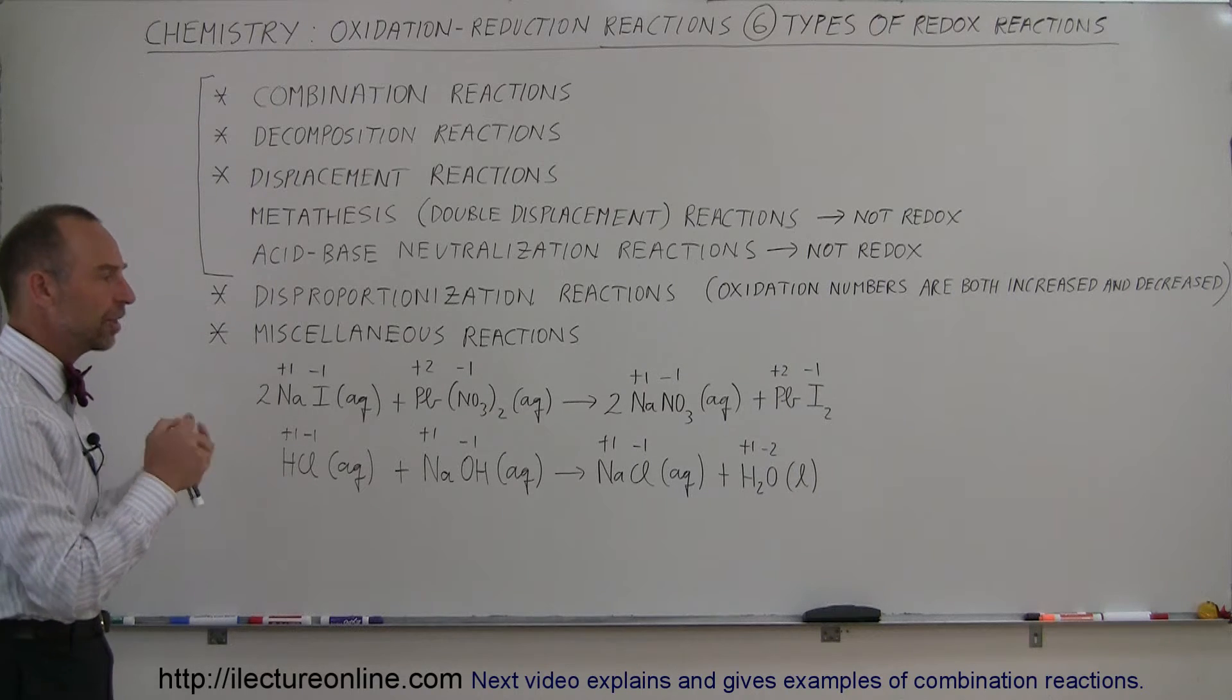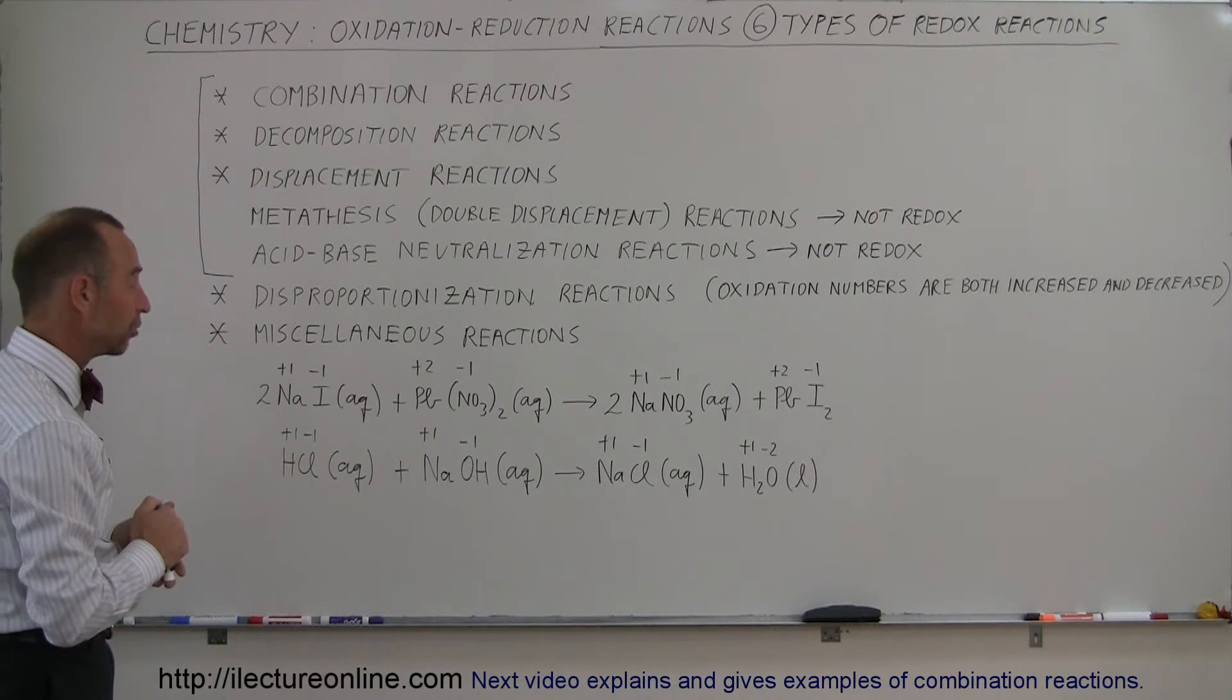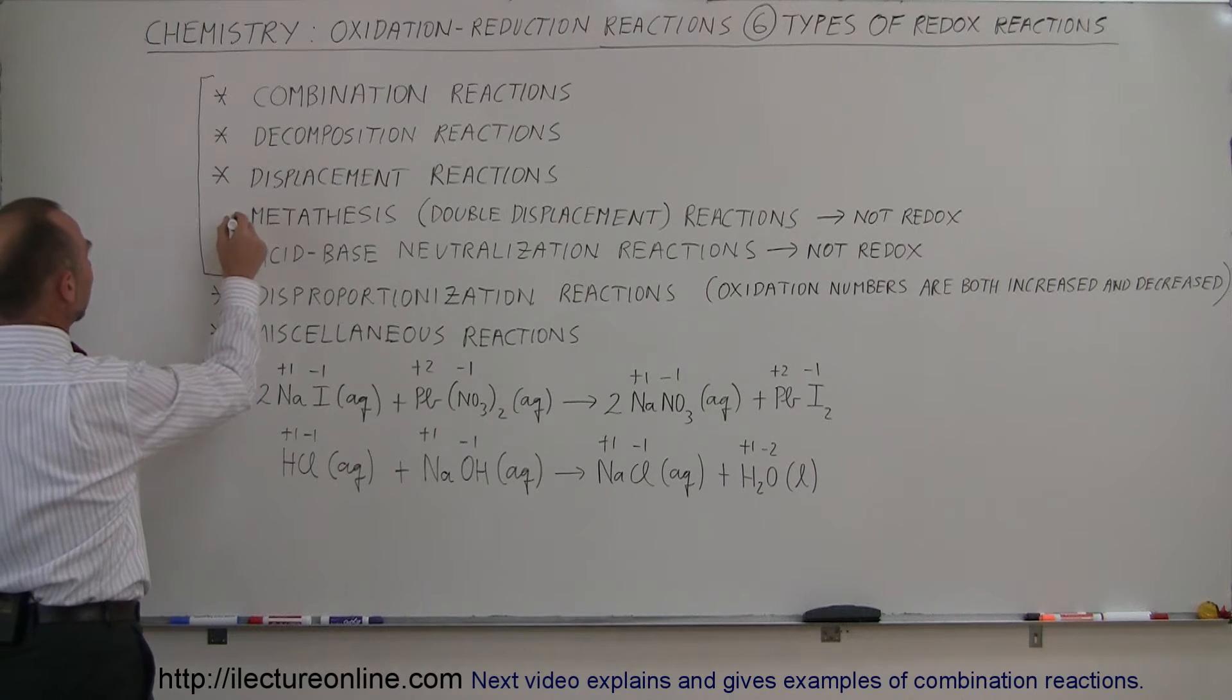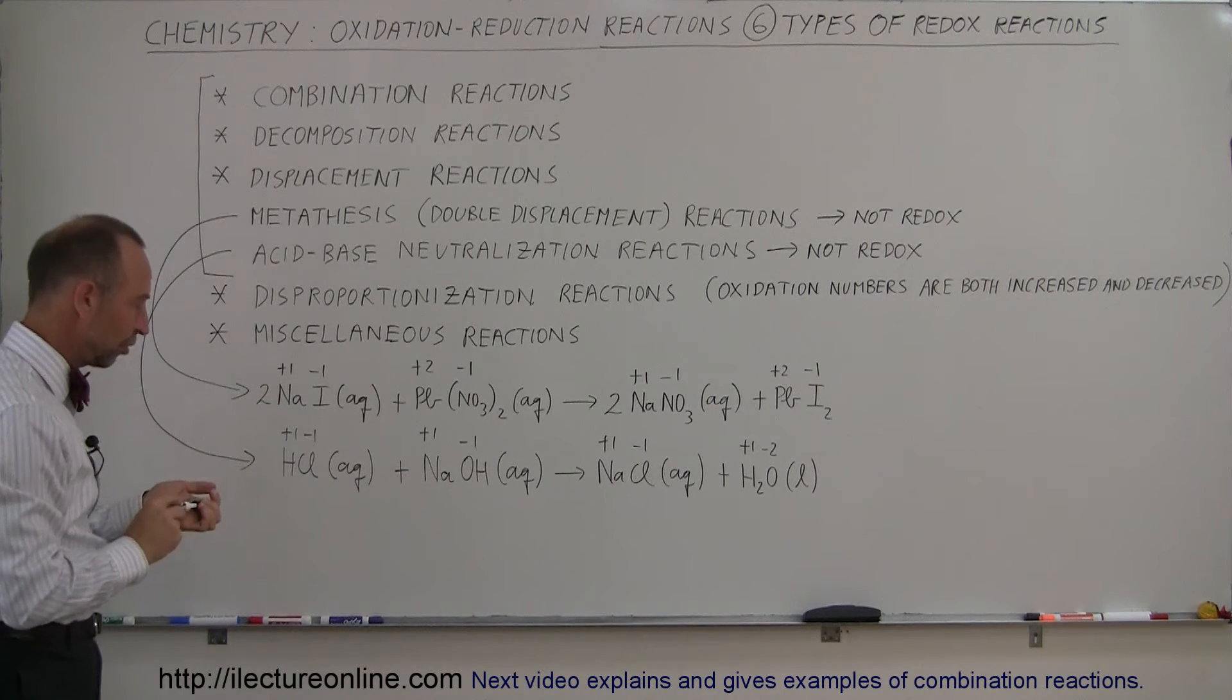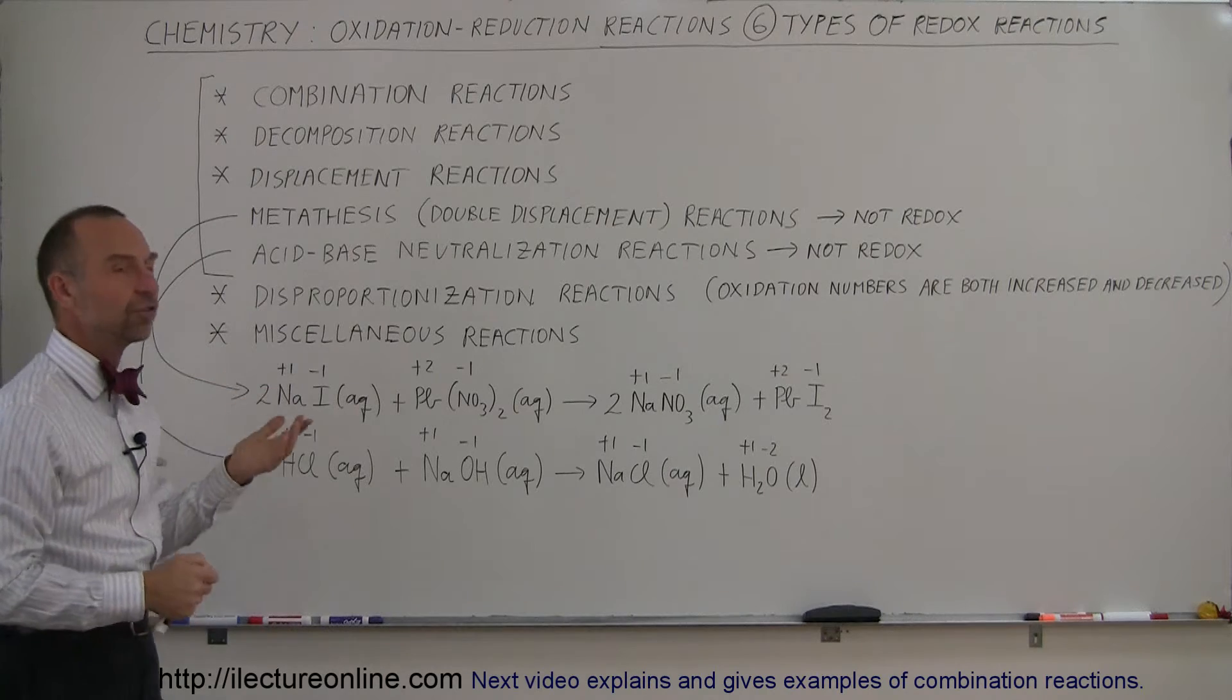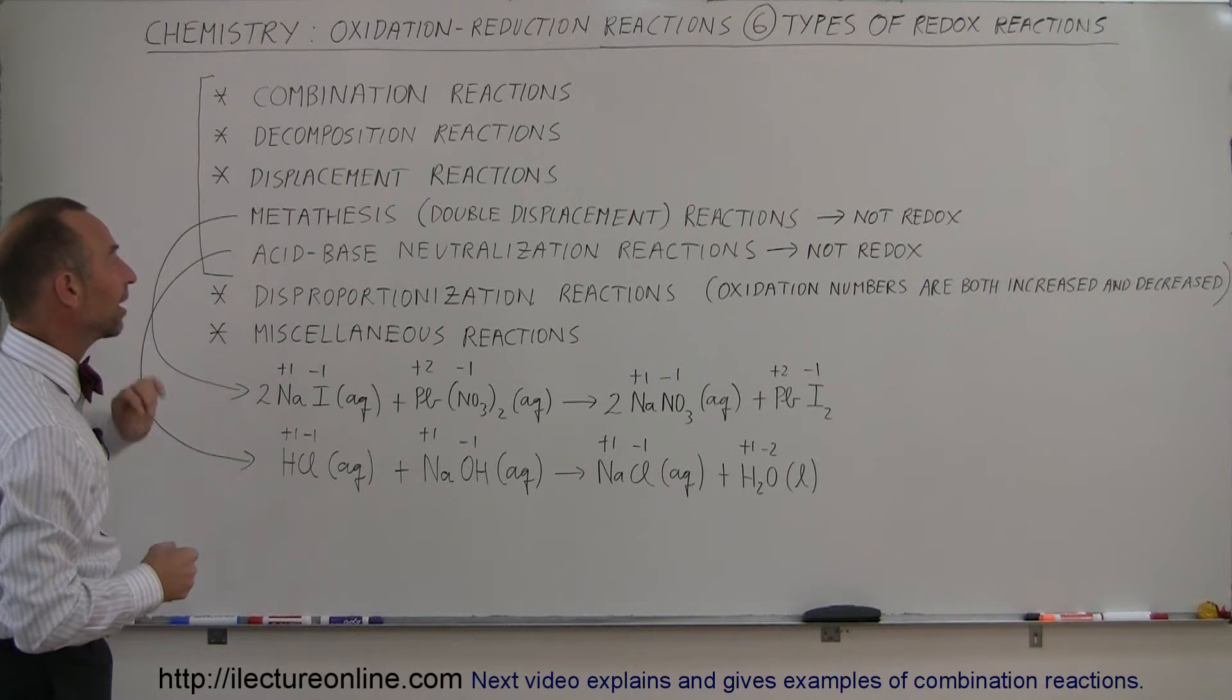That means is that the oxidation numbers do not change for any of the elements throughout the reaction. I went ahead and put some examples down for that. Here we have a metathesis reaction, and here we have an acid-base reaction. We'll take a look at those in just a moment. In all cases of the other five, the oxidation numbers of one or more of the elements will change. But for these two, it does not. So let's take a look at it.